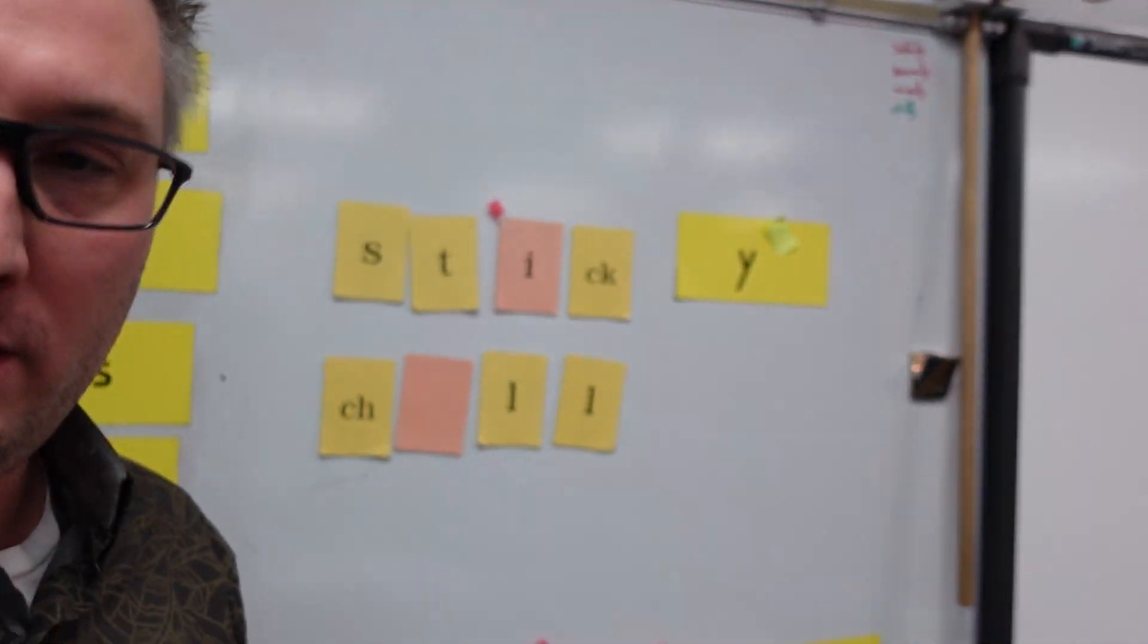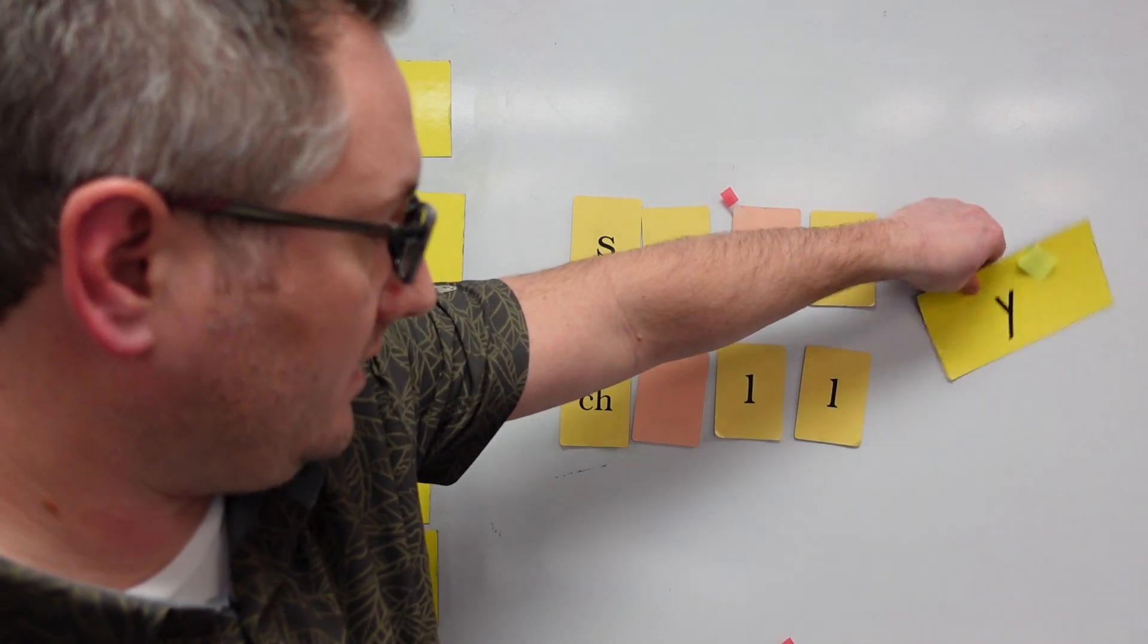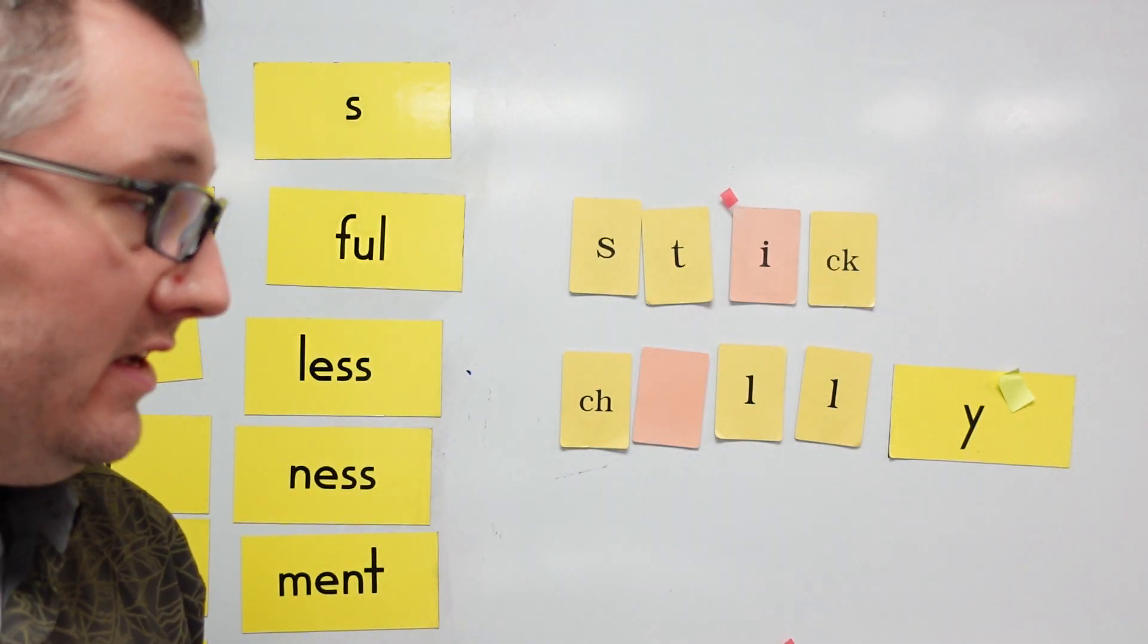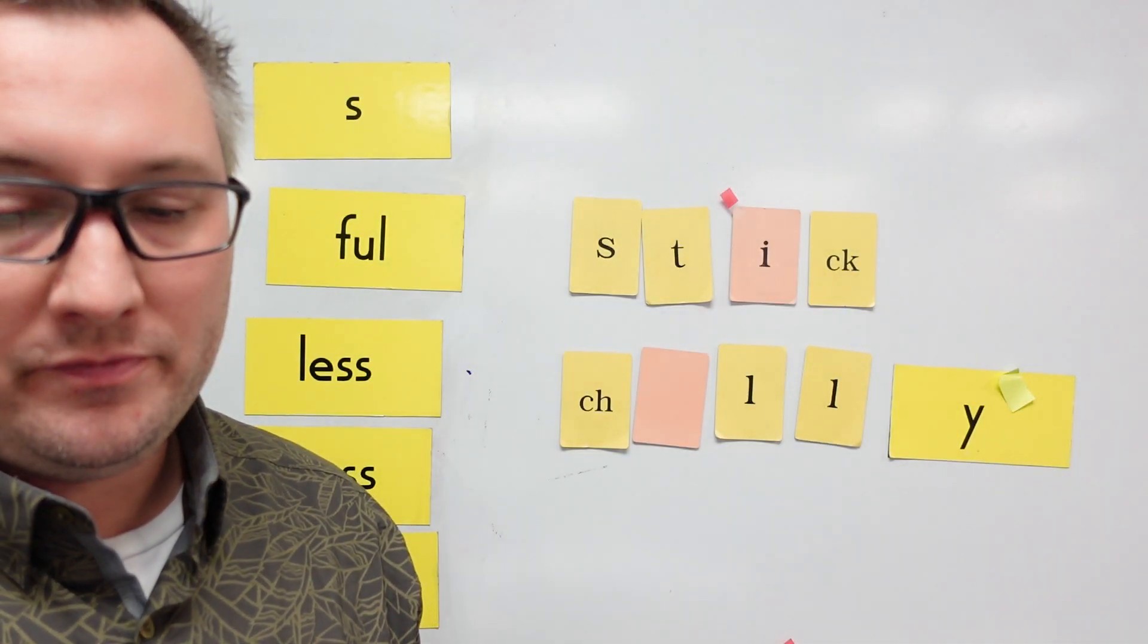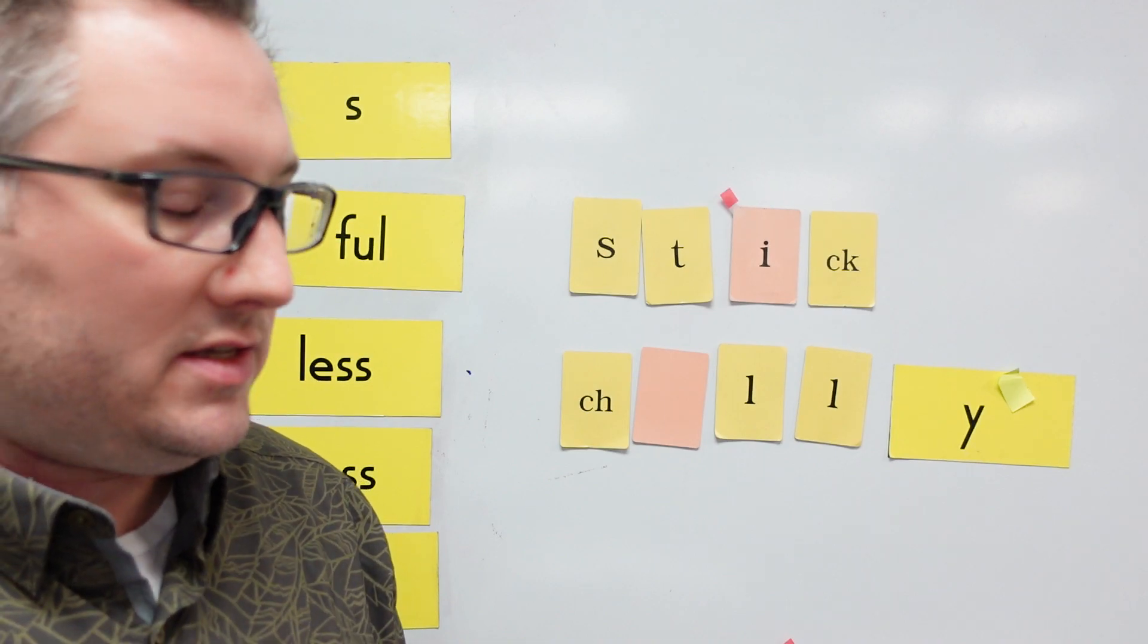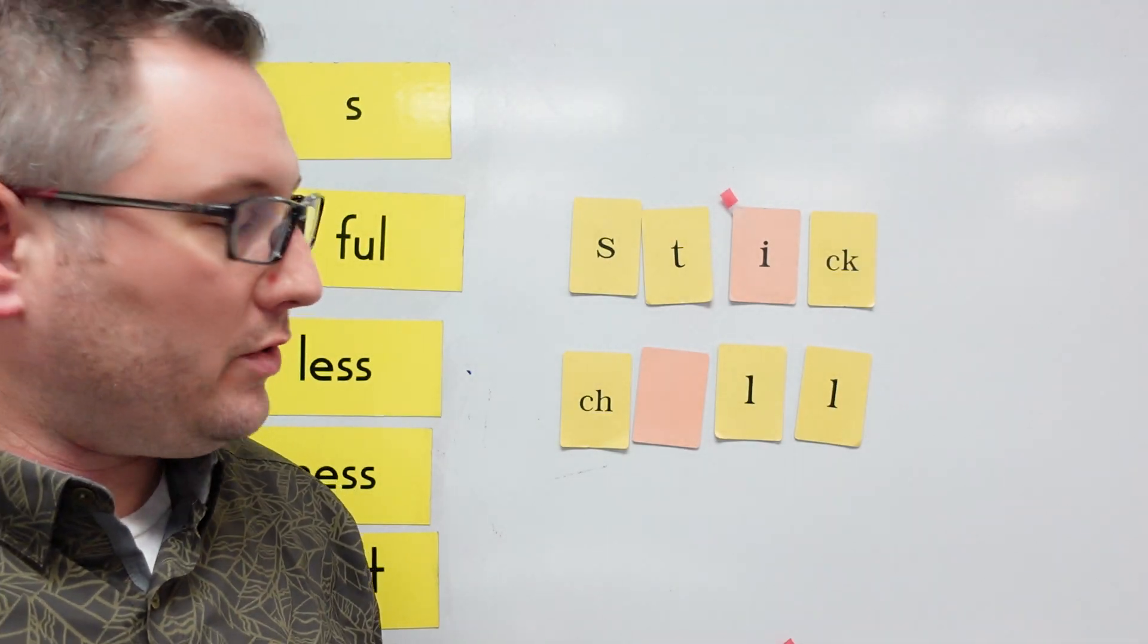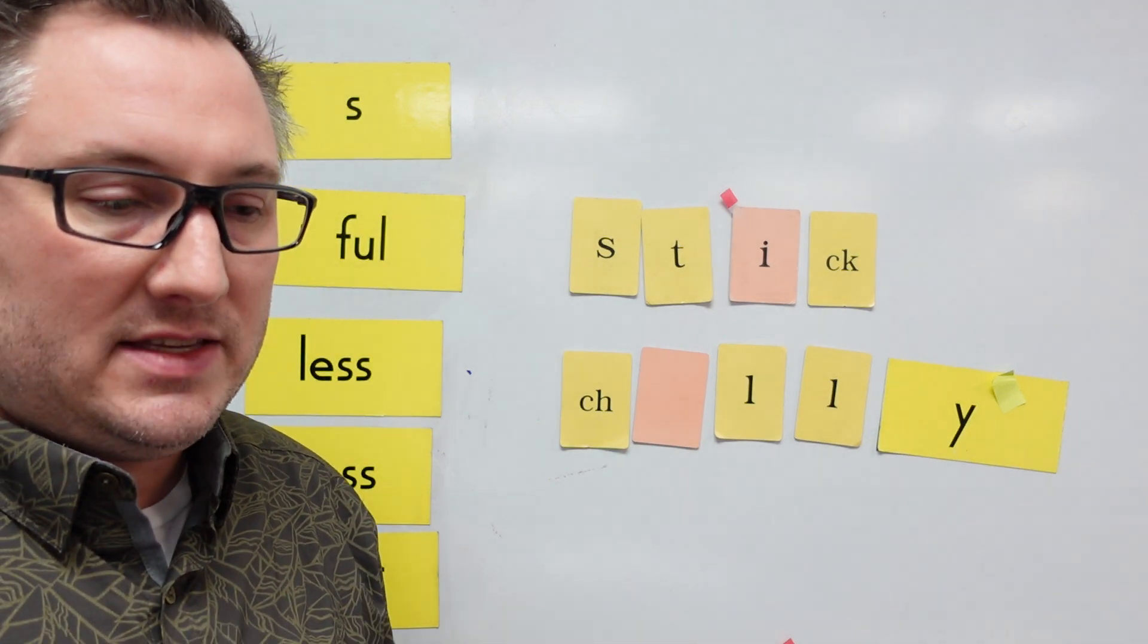I'm going to take my camera over here, and the first word we did was chilly. Now, I'm not so sure about what the meaning of the suffix Y is, but I think it's like something is kind of that way. Chill is the base word. If you add the Y to the end that says chilly, it's kind of cold.